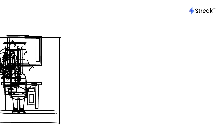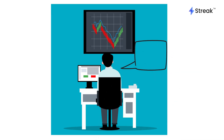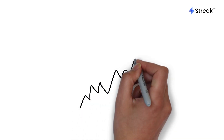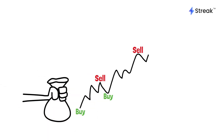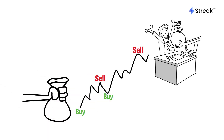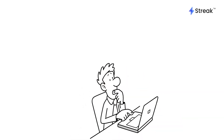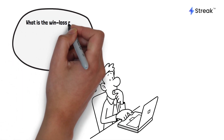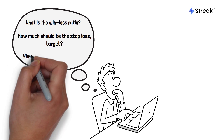However, when it comes to using strategies and indicators, I frequently see that traders start using them as soon as they learn about them from a random blog or YouTube. Using an indicator or a strategy is comparable to investing — you are putting in money and expecting some returns out of the indicator or the strategy. So shouldn't you be asking the same questions here as well? In fact, you should be asking more questions in this case, like what is the win to loss ratio, how much should be the stop loss and target, when exactly should you exit, and much more.